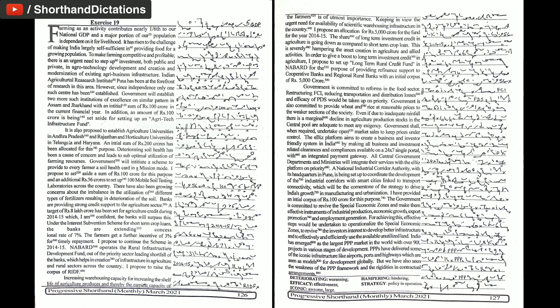Keeping in view the urgent need for availability of scientific warehousing infrastructure in the country, I propose an allocation of Rs. 5,000 crore for the fund for the year 2014-15. The share of long-term investment credit in agriculture is going down as compared to short-term crop loan.